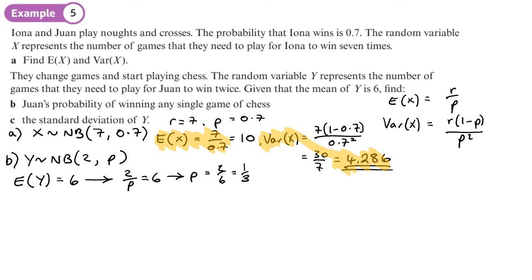Okay, part c: the standard deviation of Y. Well, now we have p, we can find the standard deviation. So r is two, so Var(Y) is r, which is two, times one minus p - so one minus a third, or two thirds - divided by p squared, so a third. One minus a third is two thirds, so we've got two times two thirds, basically four thirds at the top, and that needs to be divided by a third squared, which is a ninth.